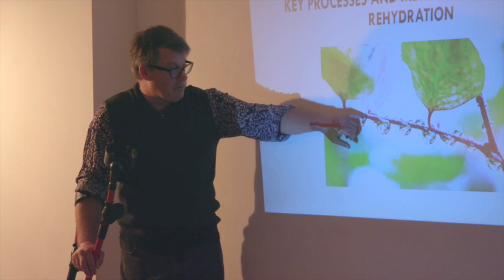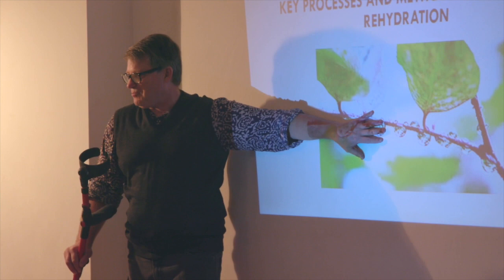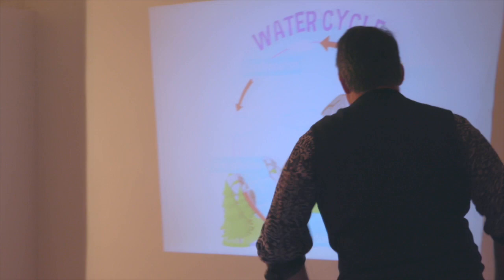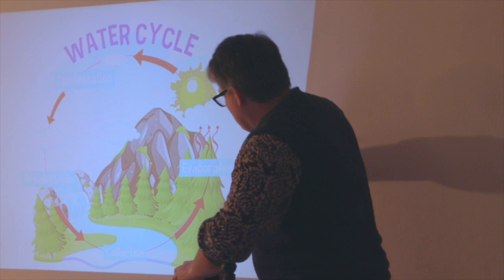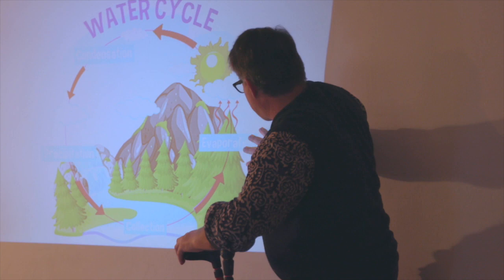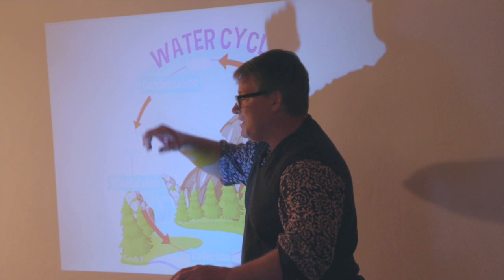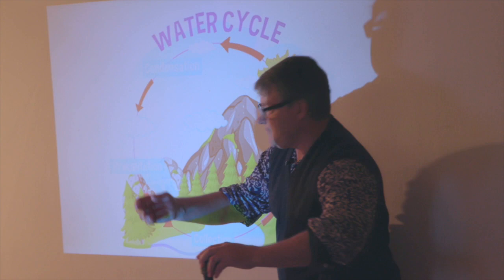I'm going to talk about this little water cycle of the droplets. This is the macro part. So here is collection, evaporation, and then you have condensation, which is our little droplets on that leaf. And then we have precipitation.